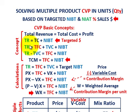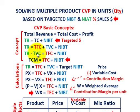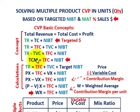Our total revenue equals our total cost, which is our total fixed cost plus our total variable cost, plus some net income before taxes. We can rearrange the equation — move our total variable cost to the other side so that total revenue less total variable cost equals total fixed cost plus net income before taxes. That gives us our total variable contribution margin: total revenue less total variable cost equals total variable contribution margin, which equals total fixed cost plus net income before taxes.